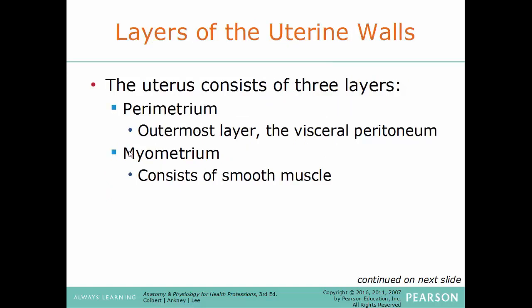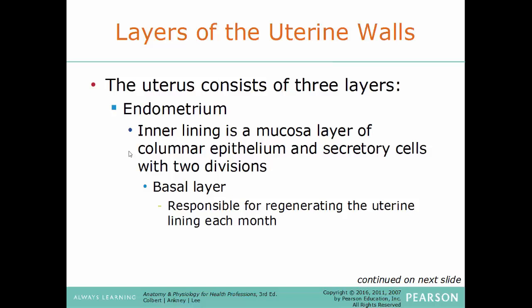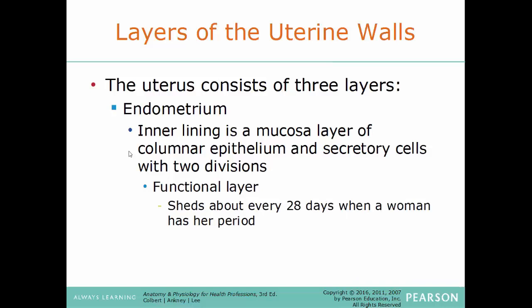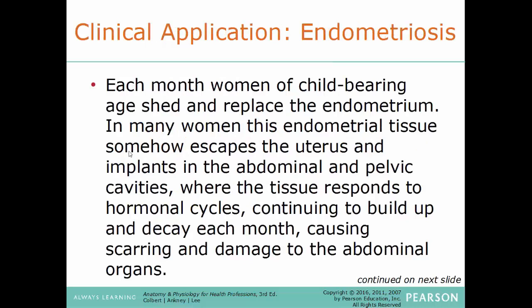The uterine wall has three layers. The perimetrium is the outermost layer, also known as the visceral peritoneum. The myometrium consists of smooth muscle — the prefix 'myo' always references muscle. The innermost lining is the endometrium, a mucosa layer of columnar epithelium with secretory cells. It has two divisions: the basal layer, responsible for regenerating the uterine lining each month, and the functional layer, which sheds about every 28 days when a woman has her period.